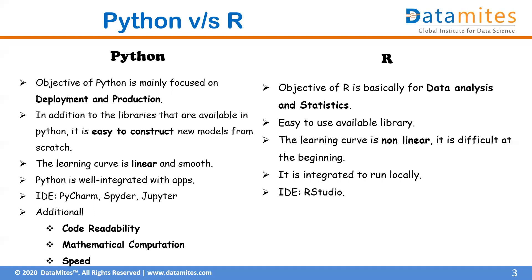R has a good collection of easy-to-use built-in libraries. A key advantage of Python is that it enables users to easily construct new models from scratch — beyond the functionalities provided by existing libraries. Users can create their own models and custom functionalities, which makes Python more flexible and powerful.